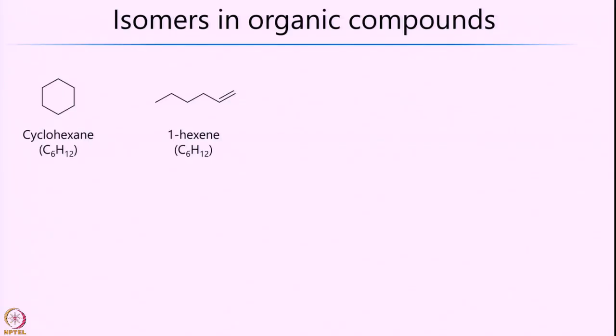I am sure you would have come across the idea of isomers in organic compounds or in other branches of chemistry. For example, cyclohexene and 1-hexene both have the same empirical formula, C6H12, but the way in which the atoms are connected in 3-dimensional space is totally different between these two organic molecules. This is one particular example of isomers in organic compounds.